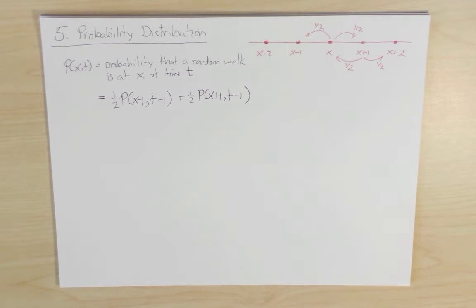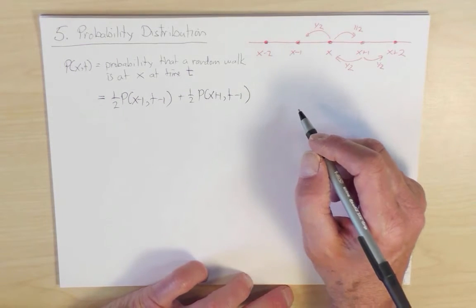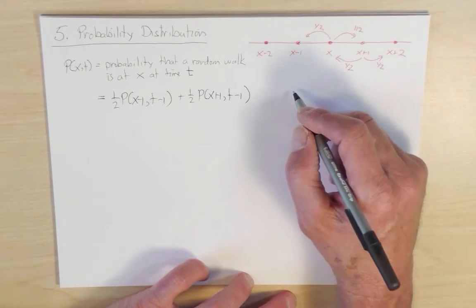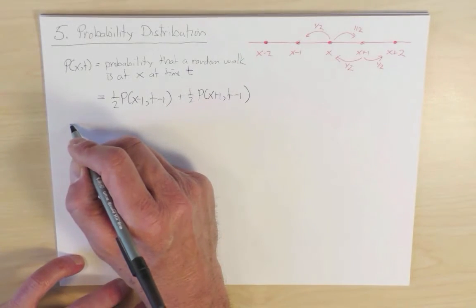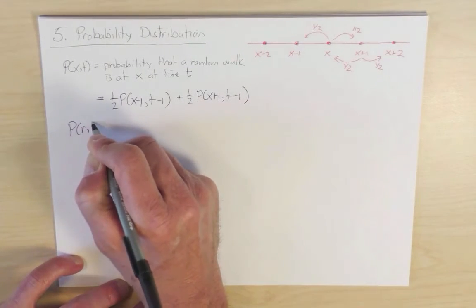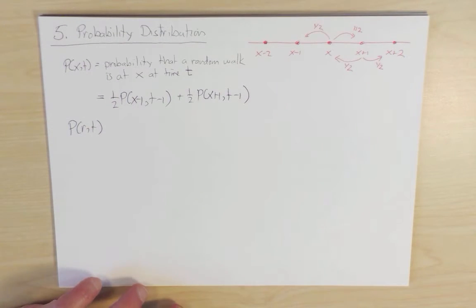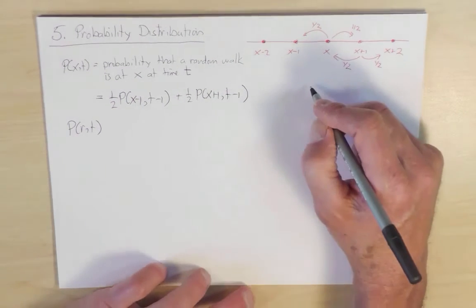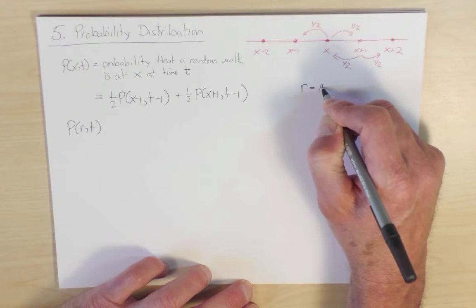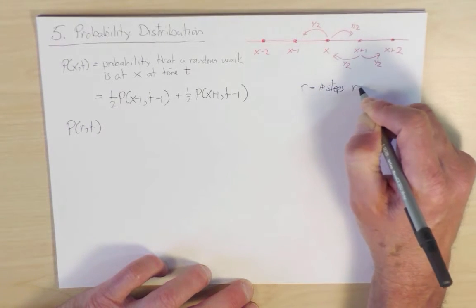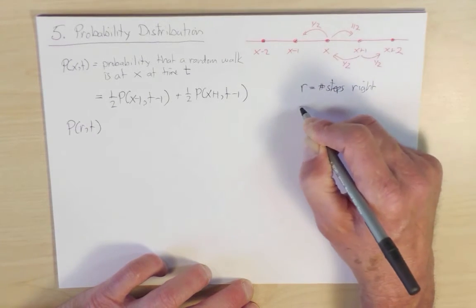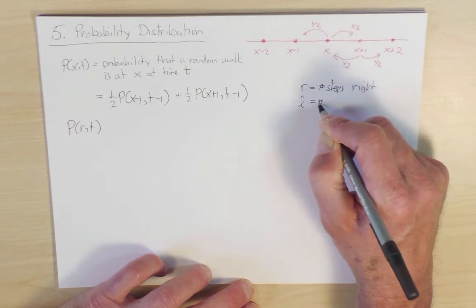Now it turns out a little bit simpler to, instead of calculating P(x,t), to look at P(r,t), the probability that in time t I take r steps to the right. So here little r is the number of steps to the right.